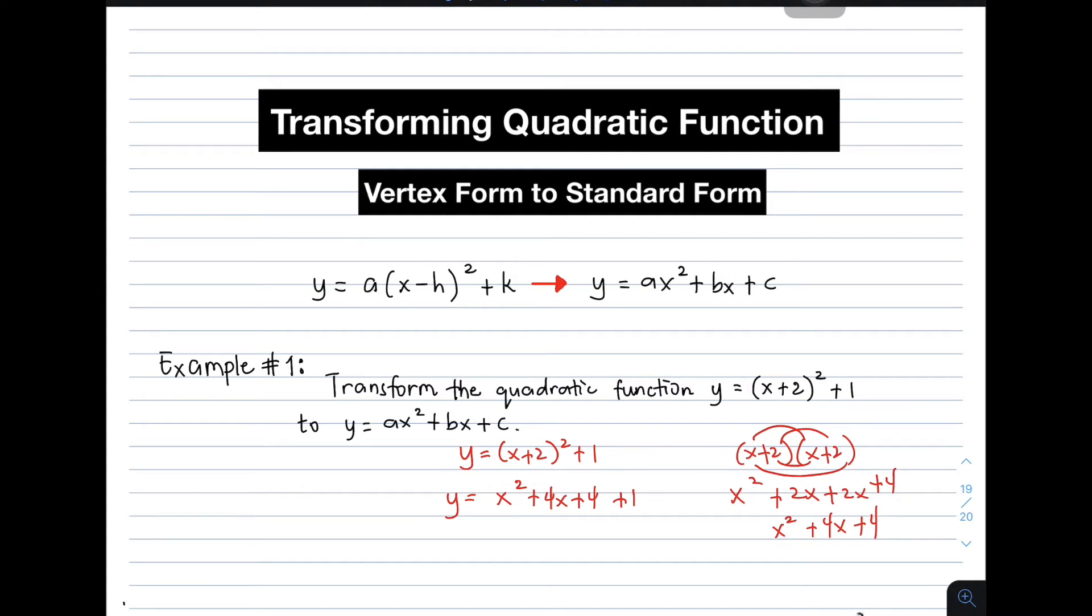Then plus 1. Combining like terms, we have constant terms here. We have y equals x squared plus 4x plus 5. This is the original equation, or the standard form of the equation given in example number 1.